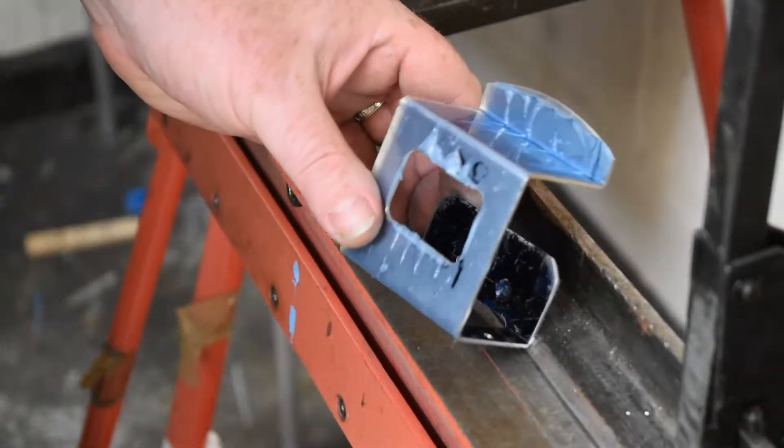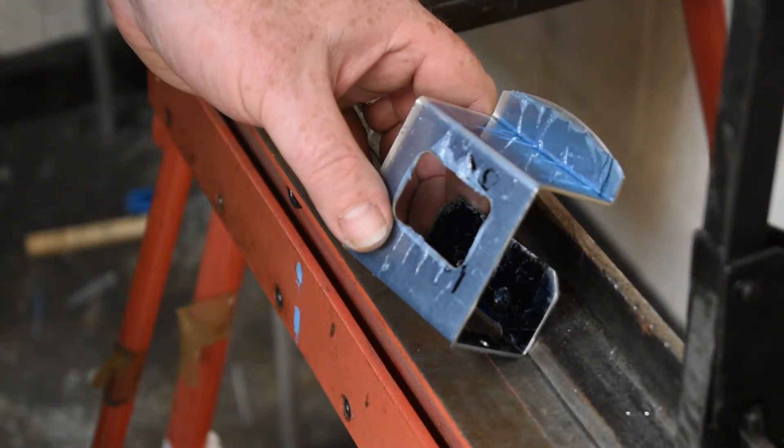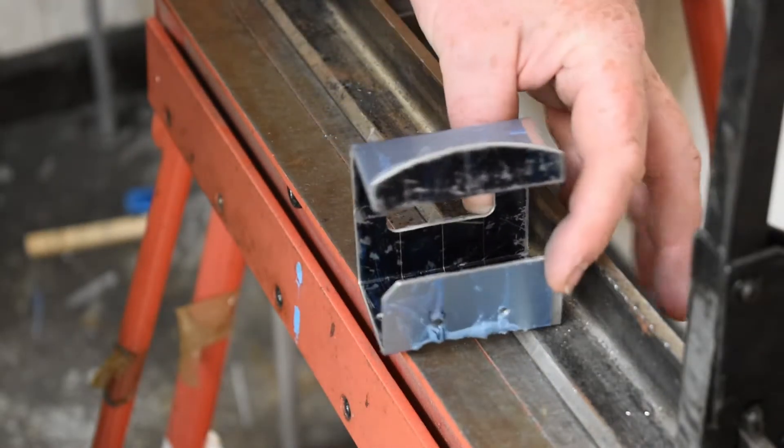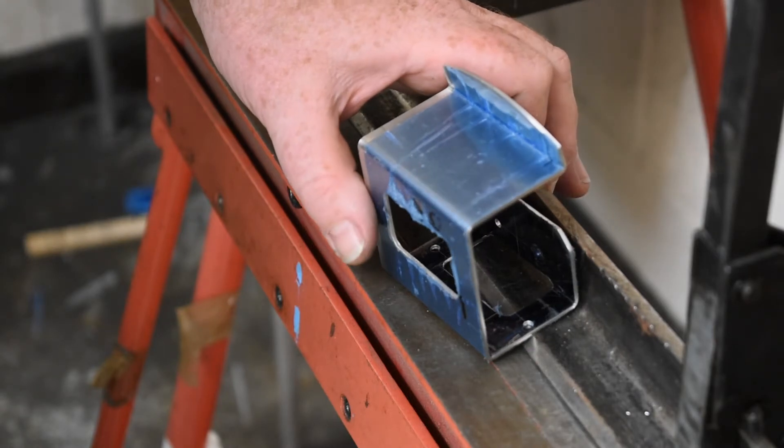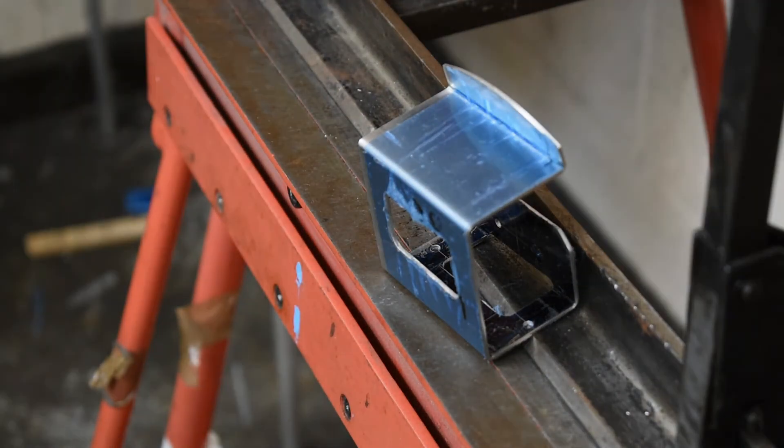And there we go there's our piece manufactured. So not too bad, little bit complicated in the bending but nothing too serious. So that's part four manufactured so we're on to part five next. Thanks for watching.